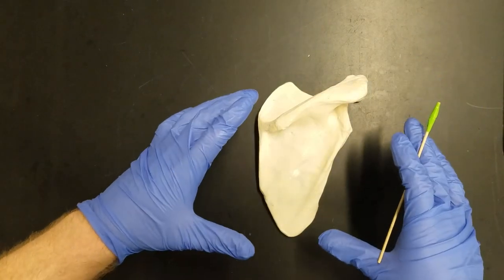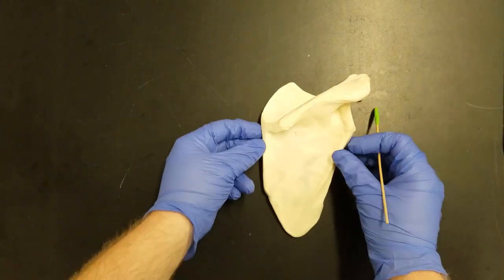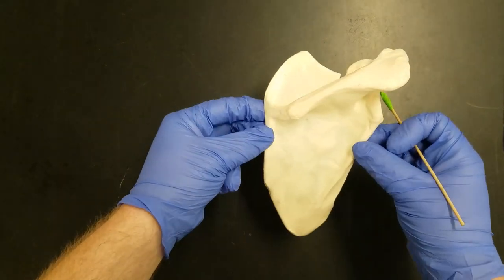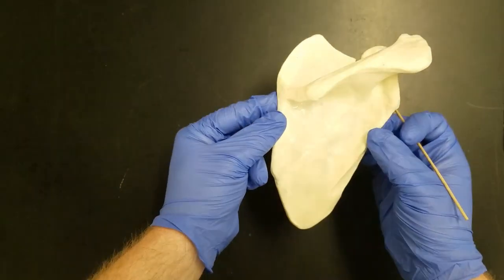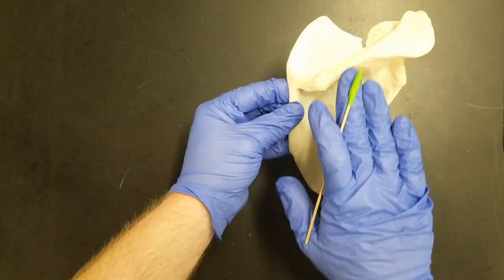In this video, we're going to be looking at the landmarks of the scapula. Here we have a right scapula, so that means it comes from the right side of the body, and we're looking at the posterior side.